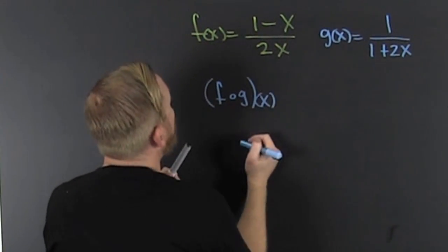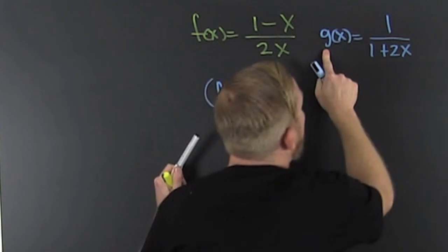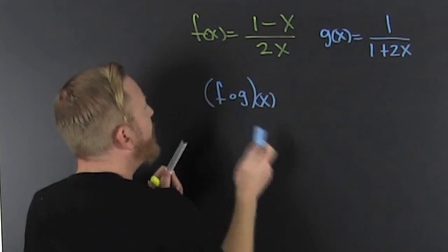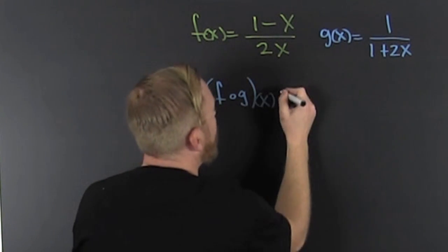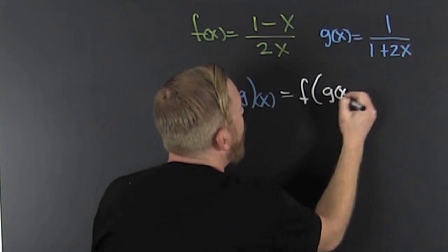What do we need? We need a couple of functions. f of x is 1 minus x over 2x. g of x is 1 over 1 plus 2x. What's next? We need to find the composition, and that is f of g of x.